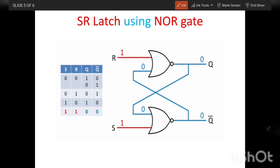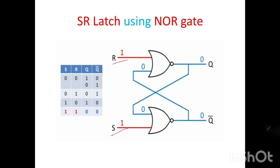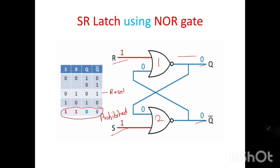In an SR latch, when both inputs are 1 — s = 1 and r = 1 — both NOR gate 1 and NOR gate 2 have a 1 input, so both outputs become 0. Both gates try to become 0 simultaneously, which is not acceptable. Therefore this is called the prohibited stage. Summary: s=0, r=1 is reset; s=1, r=0 is set; s=0, r=0 is no-change or memory stage; s=1, r=1 is prohibited.